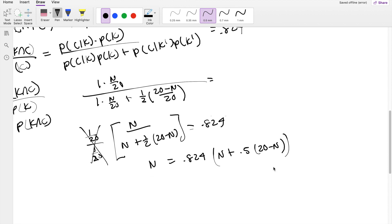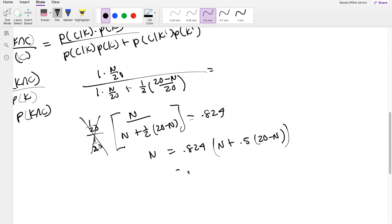I just did that because I don't really like fractions. So this is equal to 0.824N plus 0.824 times 0.5 times 20. So on the inside, this just becomes 0.824N plus half of 20, that's just 10, minus 0.5N. So this is equal to 0.824N minus half of N, so you're left with half of N plus 10 equals N.